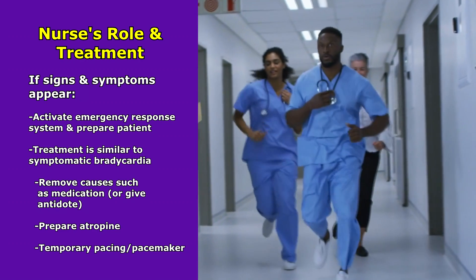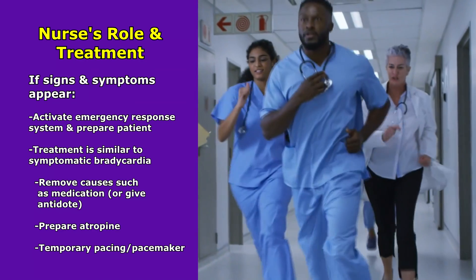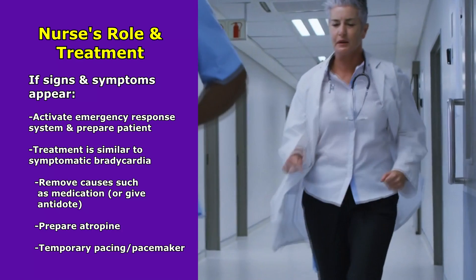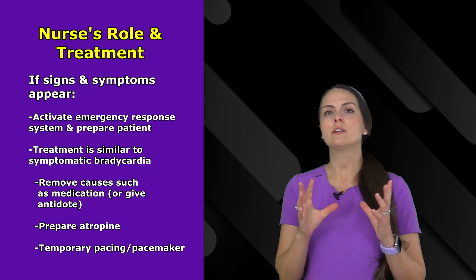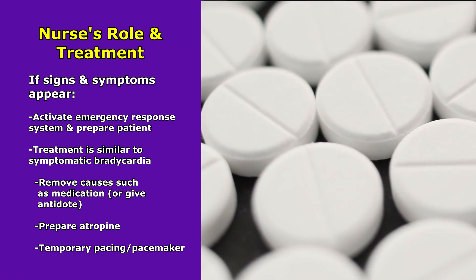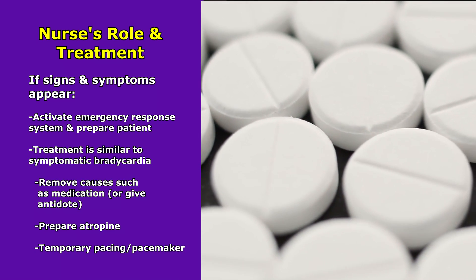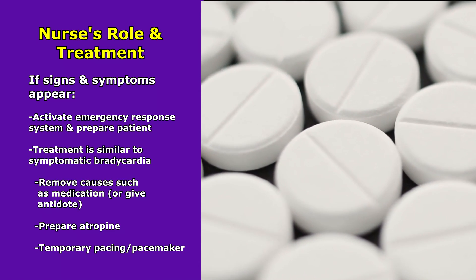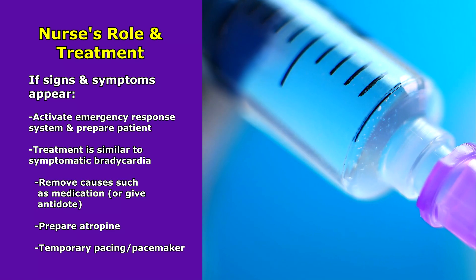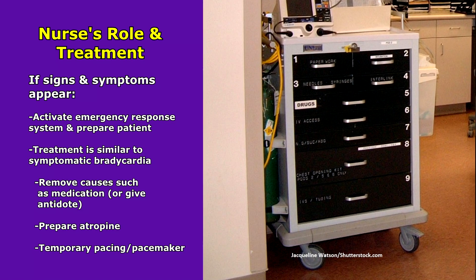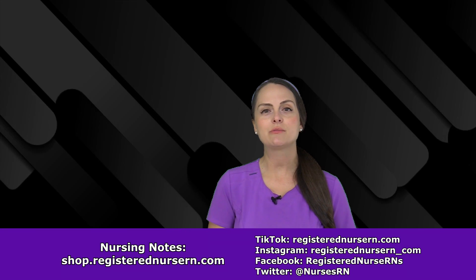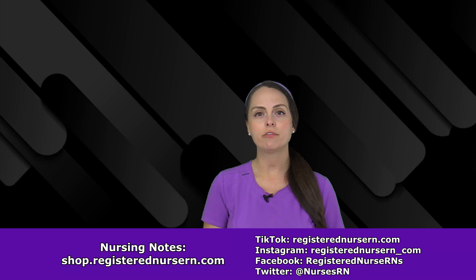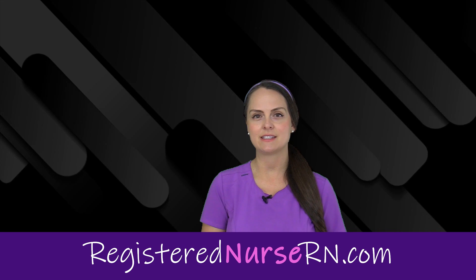If signs and symptoms appear, activate the emergency response system and prepare the patient. Treatment involves managing symptomatic bradycardia: identify and address the cause — if it's medication, remove it, and consider an antidote (especially for digoxin toxicity). Prepare atropine, which will help increase cardiac output by increasing heart rate. Some patients may need temporary pacing or a permanent pacemaker. That wraps up this review on junctional escape — don't forget to check out the other ECG videos in this series.